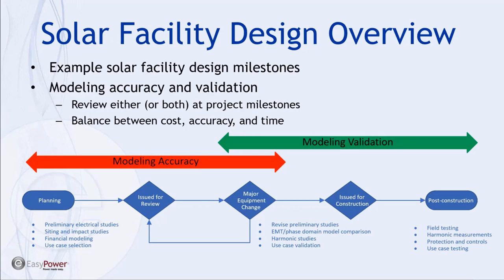The big takeaway is that the design must strike a balance between the accuracy of models and the validation of those models. As data becomes progressively detailed, we increase the accuracy of our models to the point where we step into validating results through comparison to other simulations or actual on-site testing. Throughout all these decisions, we have to strike a balance between cost, accuracy, and time — generally you can choose two of those three to maximize at the detriment to the third.